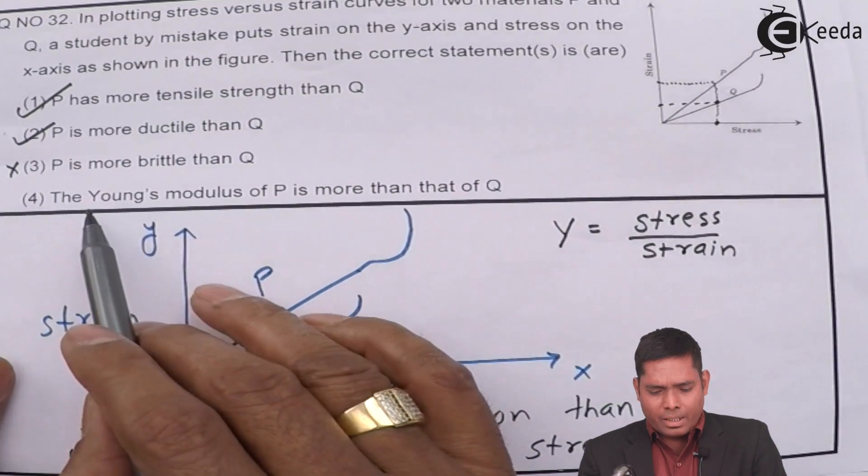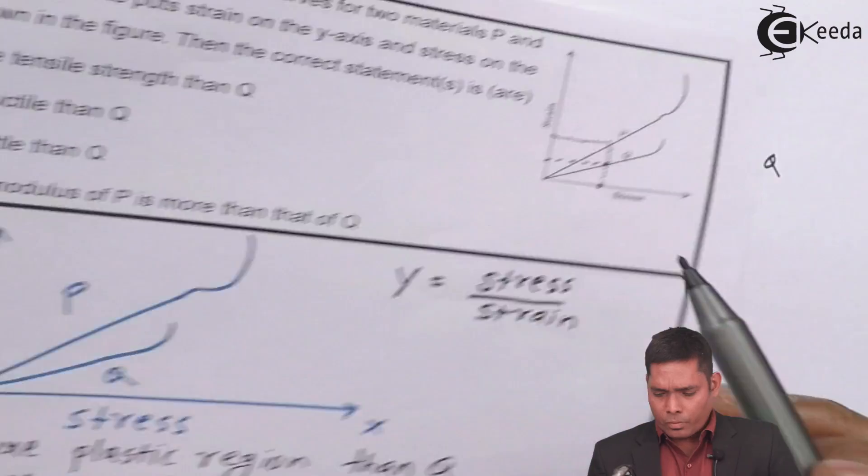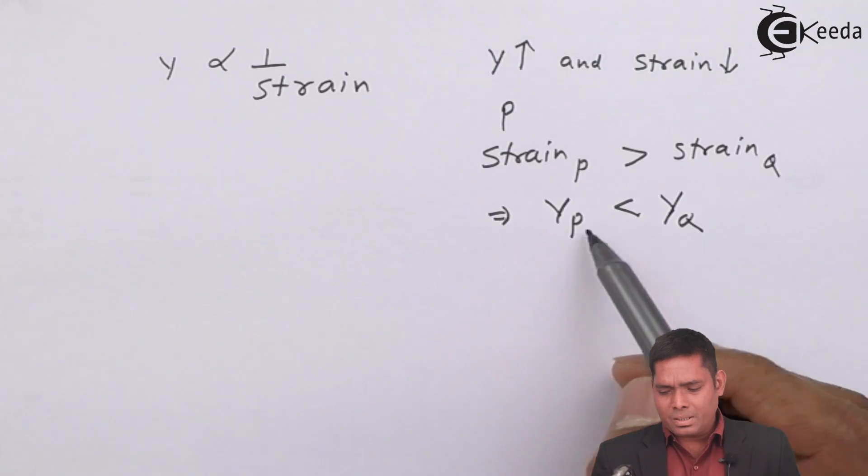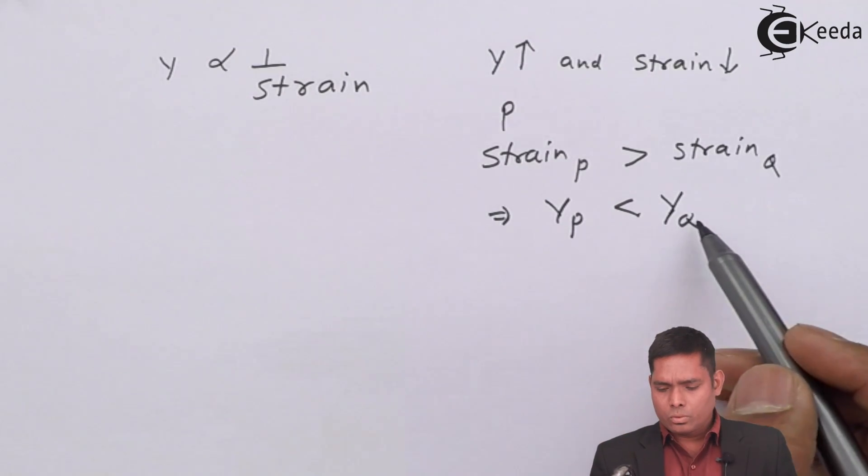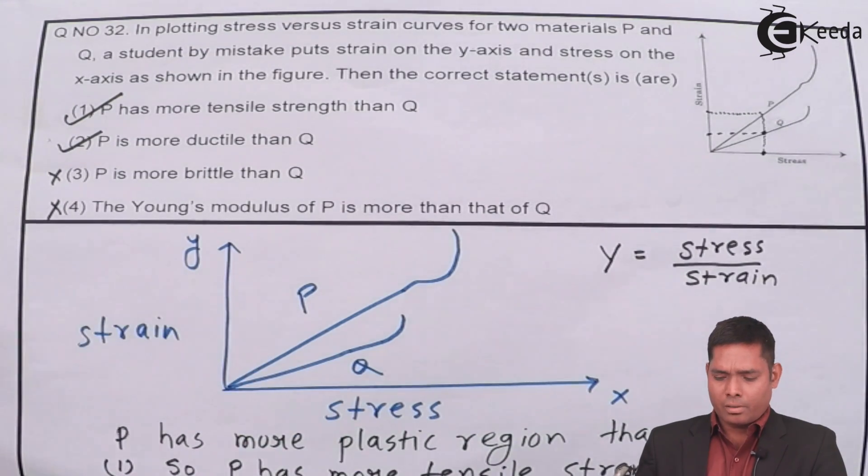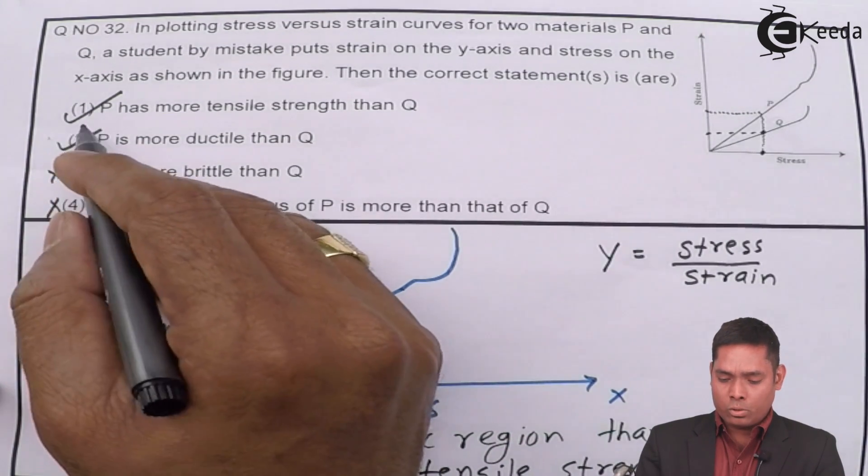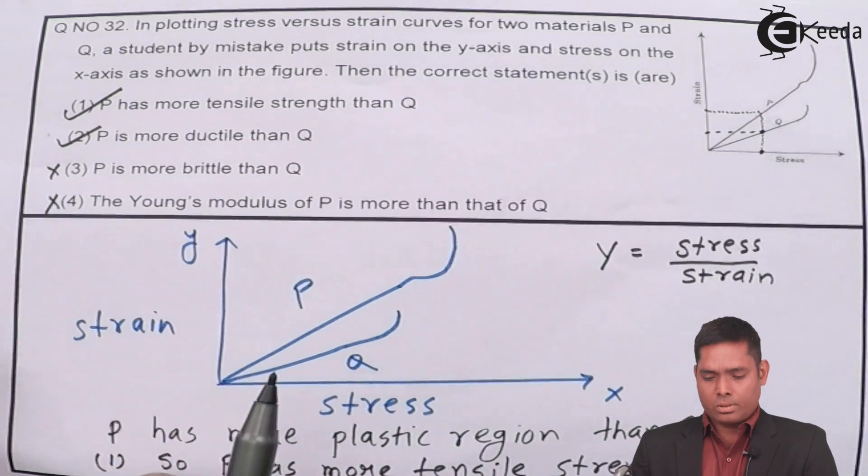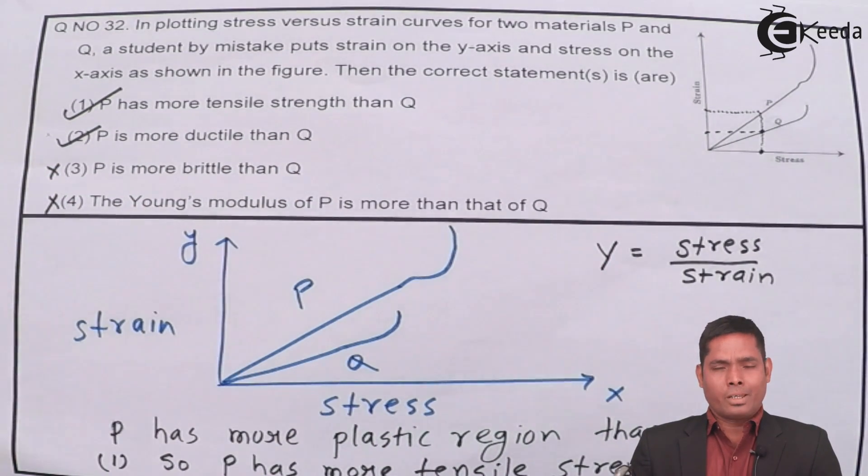The question is given that the Young's modulus of P is more than that of Q, but it is found that Young's modulus of P is less than that of Q. So therefore this option is also not right. So one and two, these two options are correct options for this question. Okay, thank you.